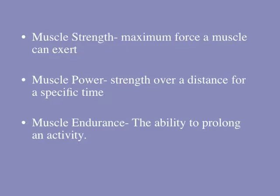A few more definitions we've already gone through in class. Muscle strength is the maximal force a muscle can exert. Power is strength over a distance for a specific time. Endurance is the ability to prolong that activity. When training for muscular endurance, we're at a sub-max level. We don't have to train for just one of these components — we can mix them up and train for more than one.